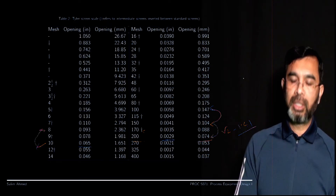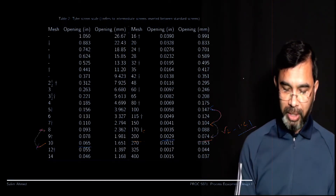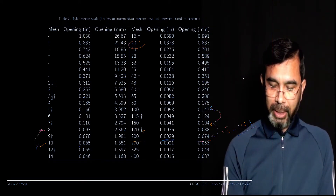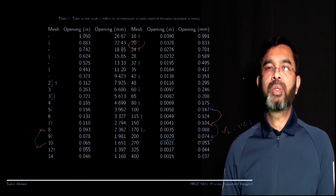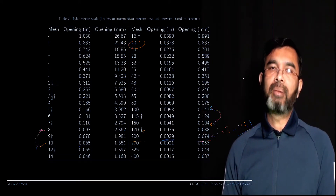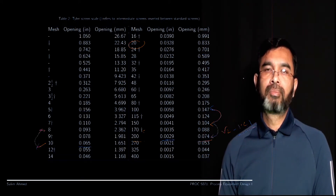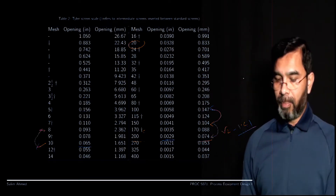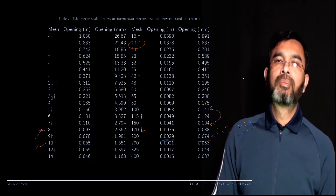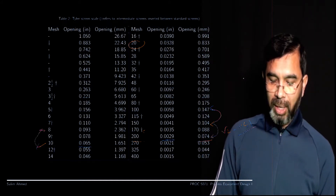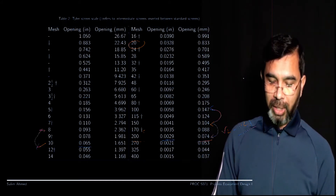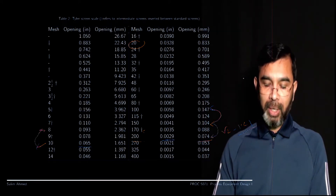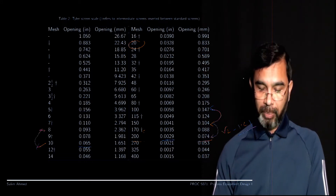For example, the 10 mesh screen has 10 openings per inch, giving an opening of 0.065 inch on one side. The next screen is 8 mesh, and multiplying 0.065 by 1.41 gives 0.093 inch. If you say a particle size is between 20 mesh and 28 mesh, anyone working anywhere will exactly understand what you mean — that is the value of these standardized screens.